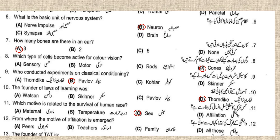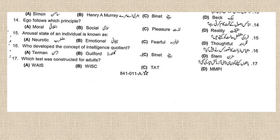Number eleven: which motive is related to the survival of the human race? Sex, or genes, is related to the survival of the human race. Number twelve: from where does the motive of affiliation emerge? It emerges from family.